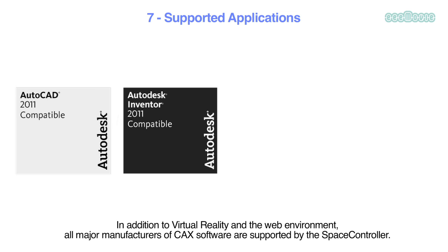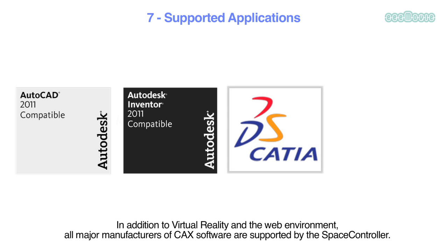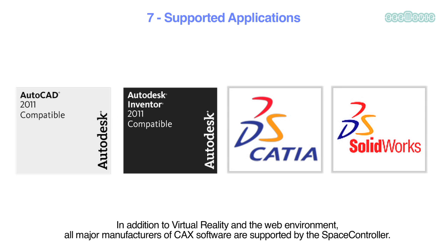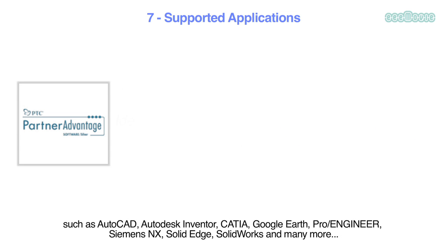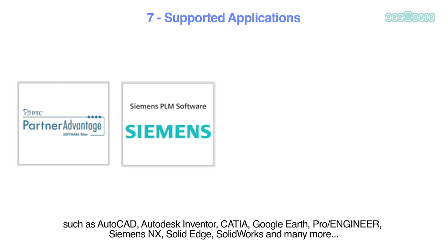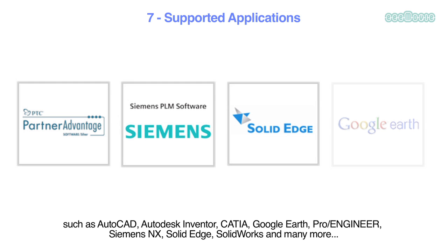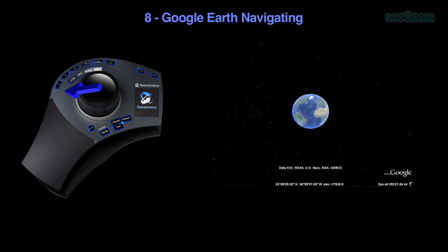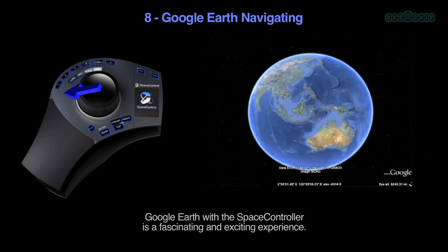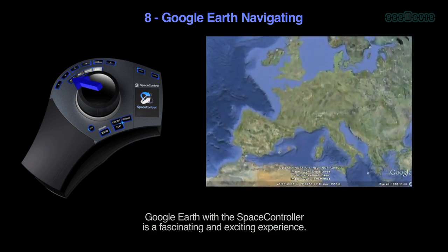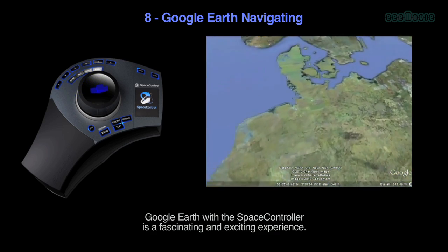In addition to virtual reality and web environments, all major manufacturers of CAx software are supported by the Space Controller — such as AutoCAD, Autodesk Inventor, CATIA, Google Earth, Pro/ENGINEER, Siemens NX, Solid Edge, SolidWorks, and many more. Navigating Google Earth with a Space Controller is a fascinating and exciting experience.